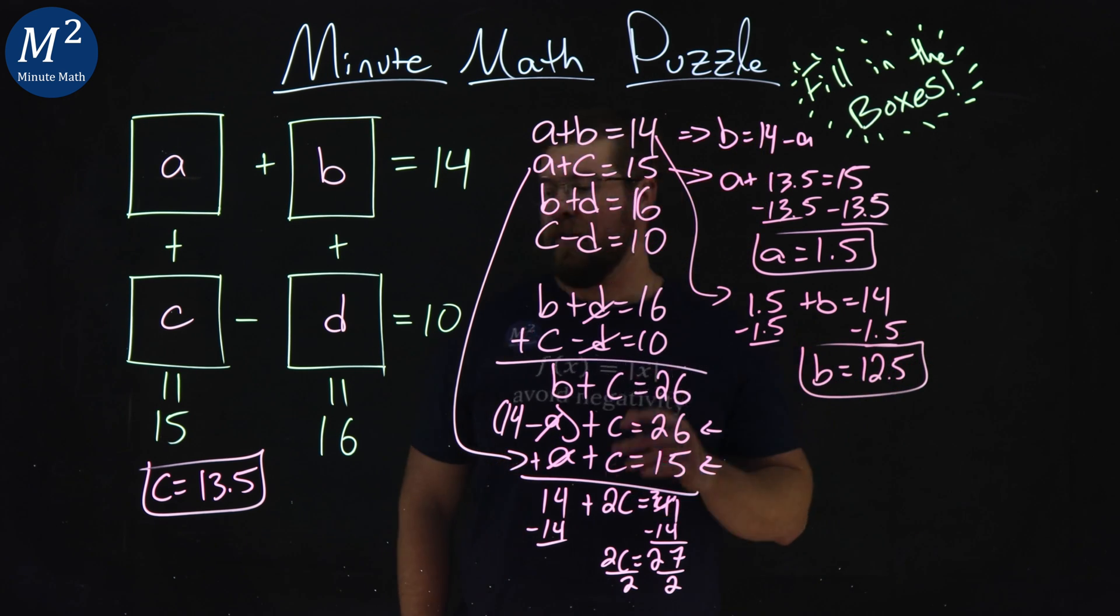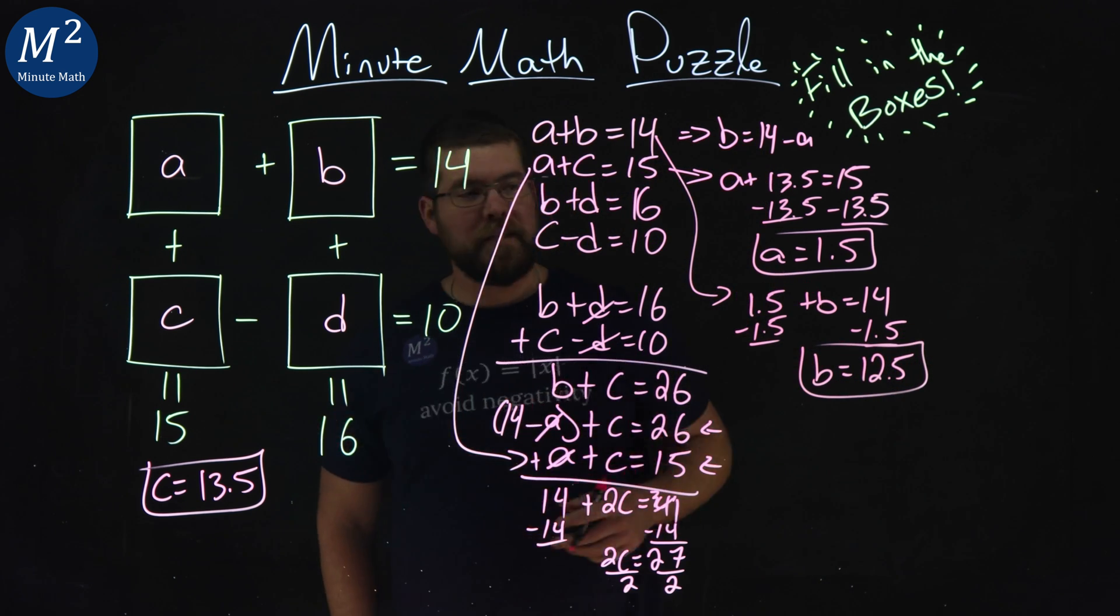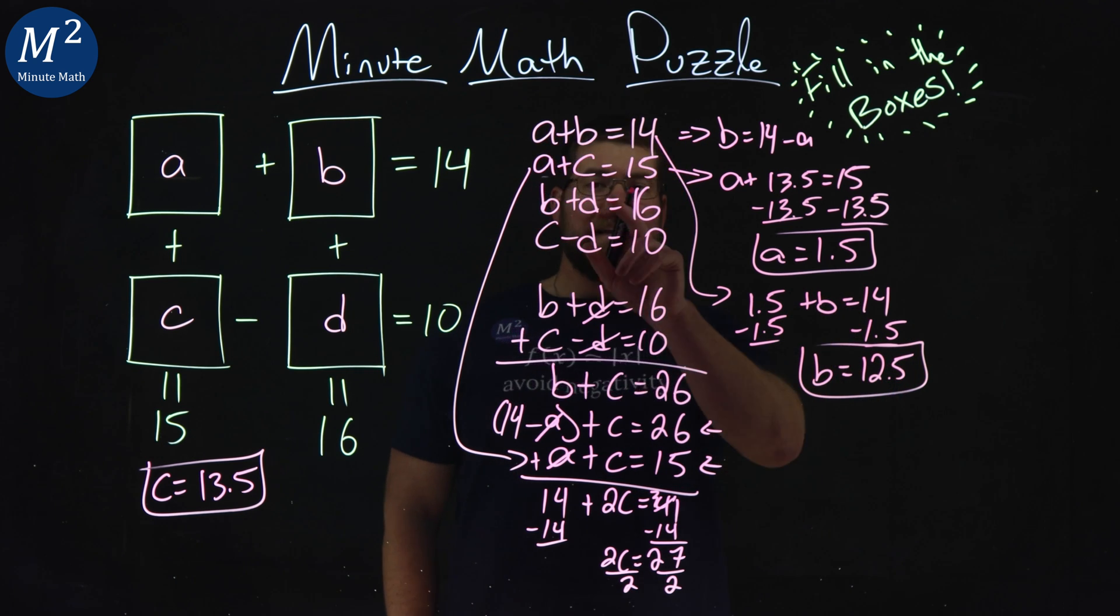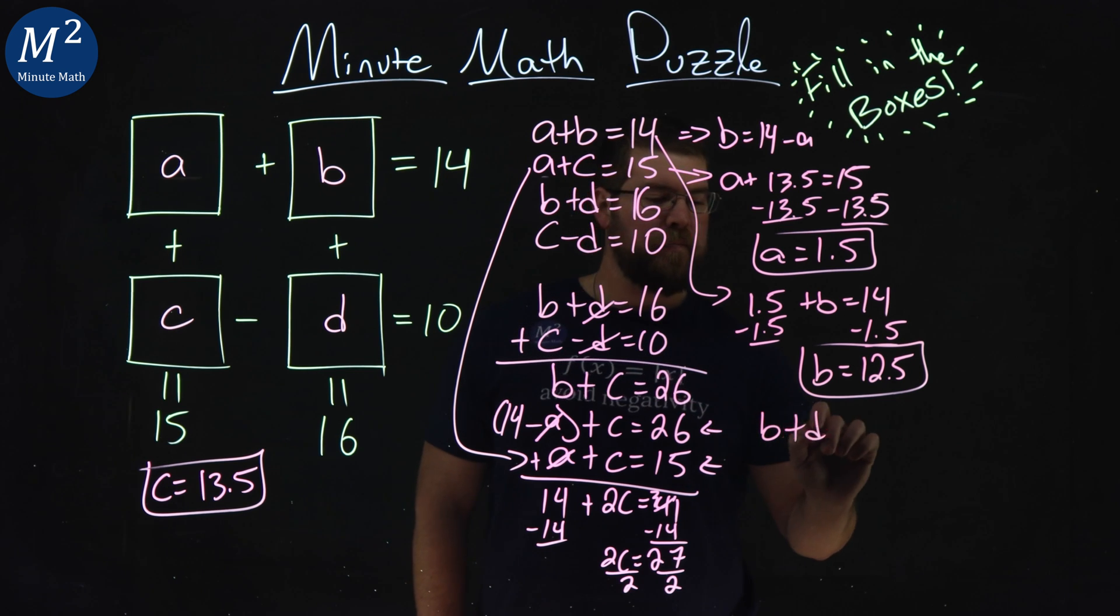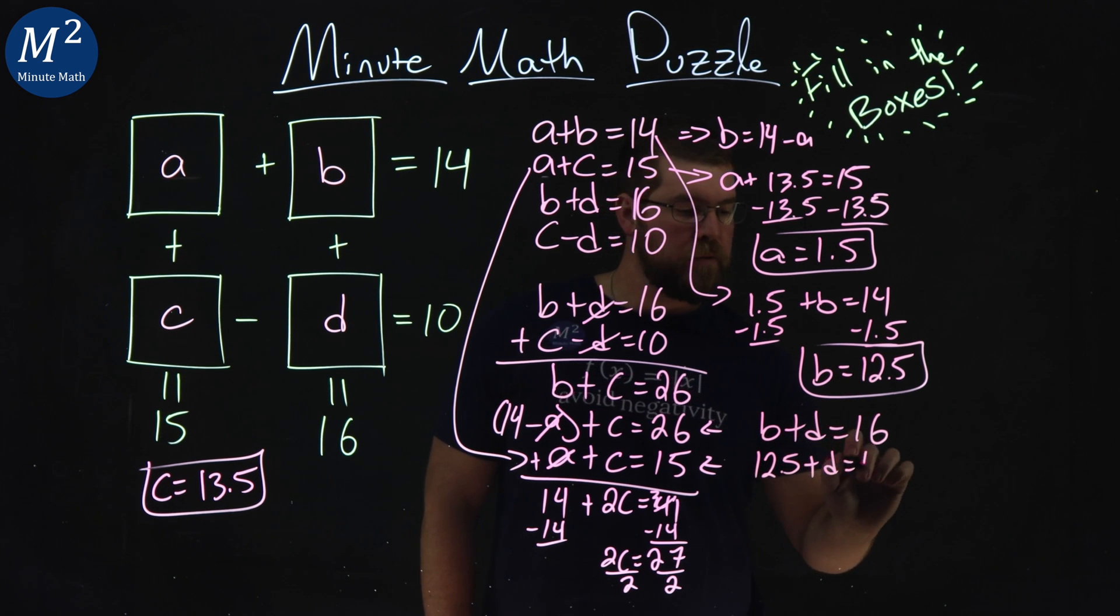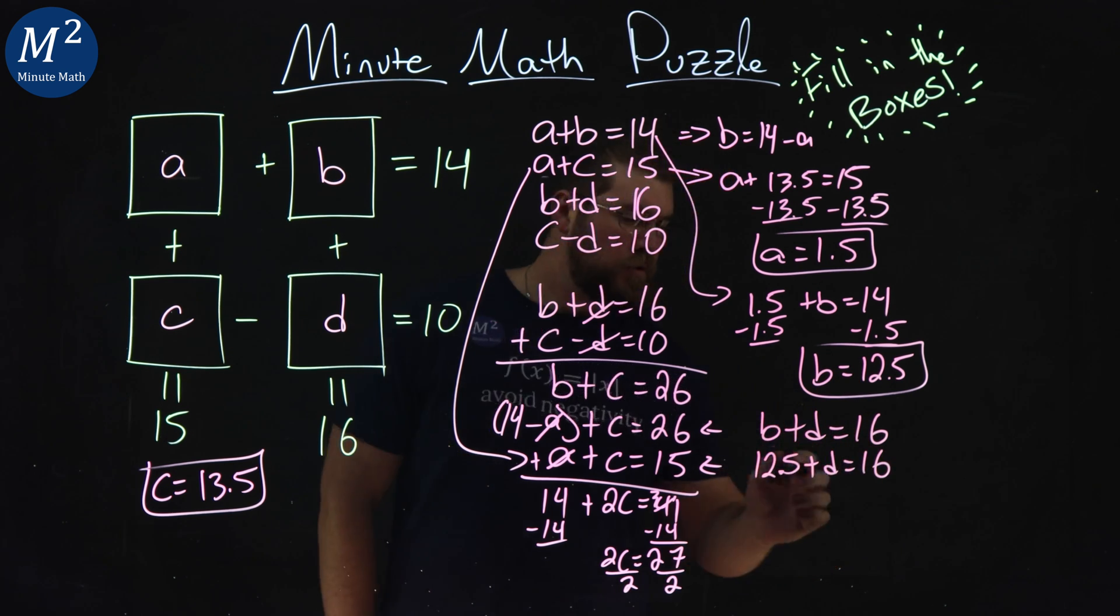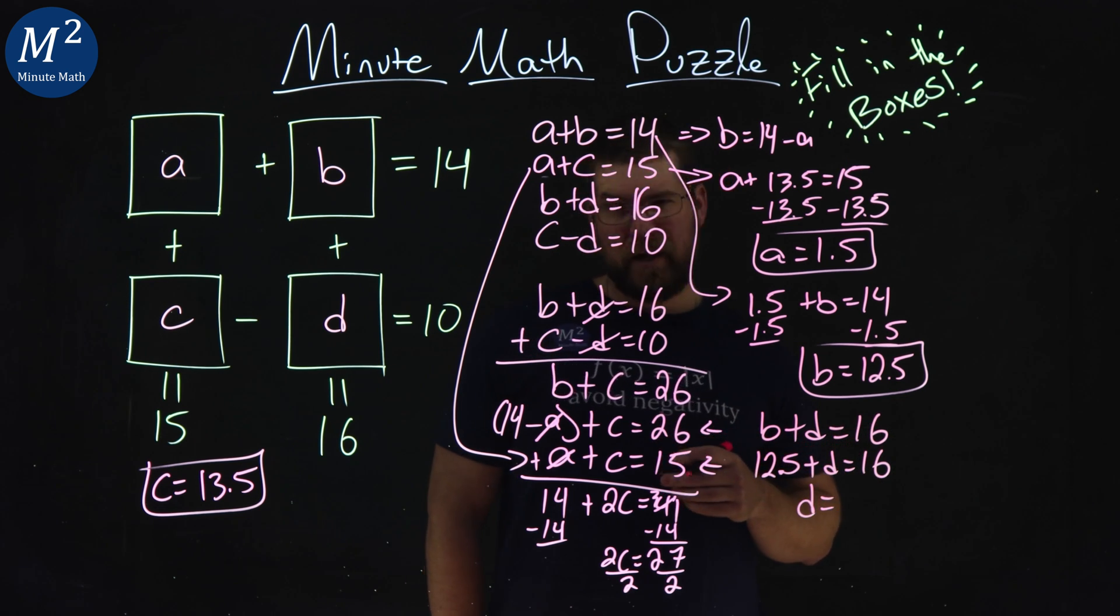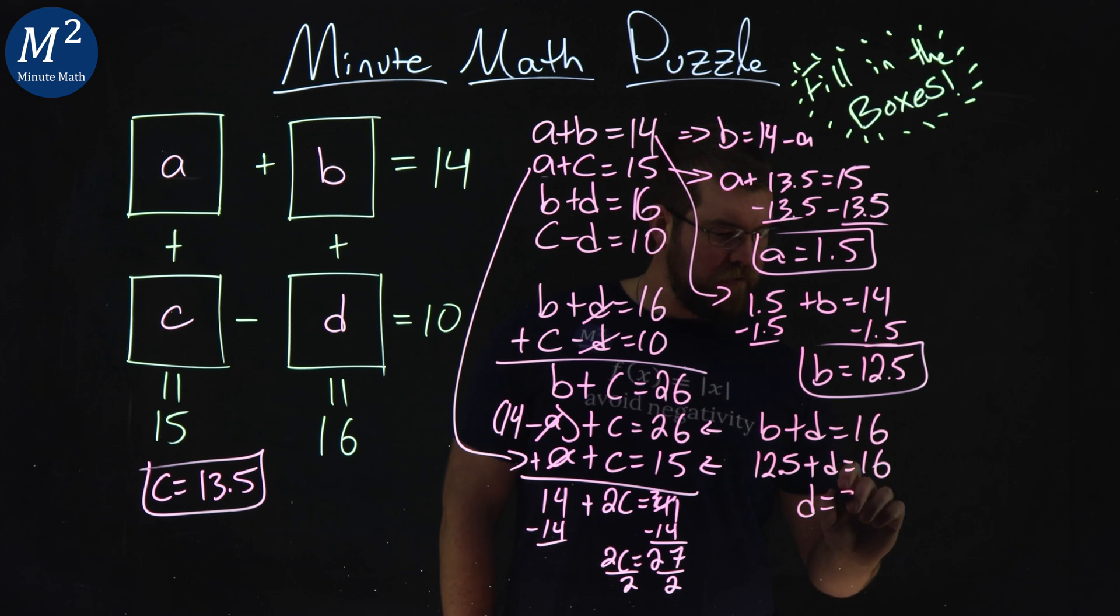And we have A, we have B, we have C. We just need the D. So we've got to find D here. We have B plus D equals 16. B is 12.5 plus D equals 16. Subtract the 12.5 to both sides, and we have D here equals 16 minus 12.5, which is 3.5.